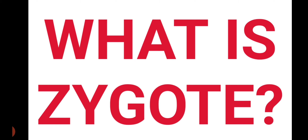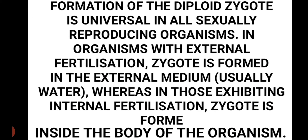The formation of a diploid zygote is universal in all sexually reproducing organisms. That means it is compulsory that each and every sexually reproducing organism starts its life from a diploid zygote.